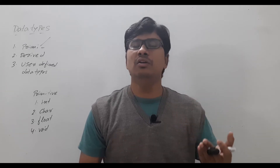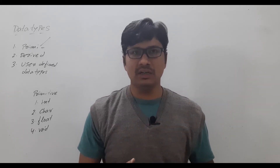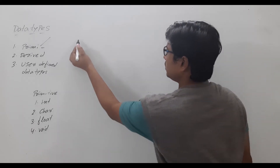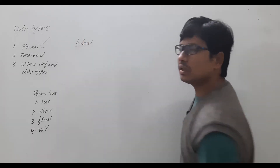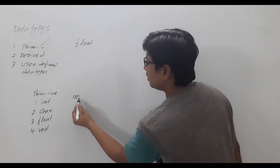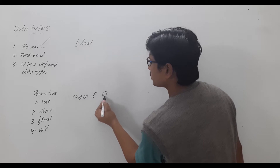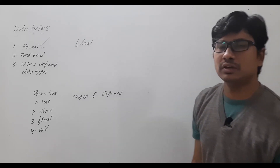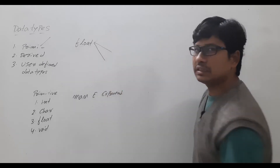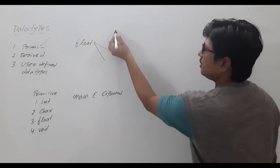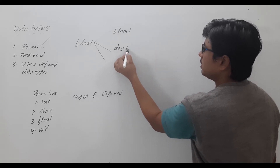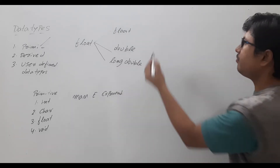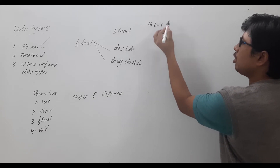In this video I want to discuss about float, which allows you to store real constants. Please watch the complete video for better understanding. The float is able to store real constants, which will be in the form of mantissa E exponent. Float is again classified into three types: float, double, and long double.